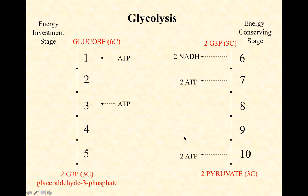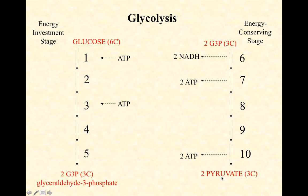It costs us two ATPs up front, then we get four out the back end, so we net two ATPs per glucose. The whole process: a six-carbon glucose gets split first into two three-carbon glyceraldehyde 3-phosphates, which then get rearranged into two three-carbon pyruvates. We invested two ATPs, got four out, and netted two.